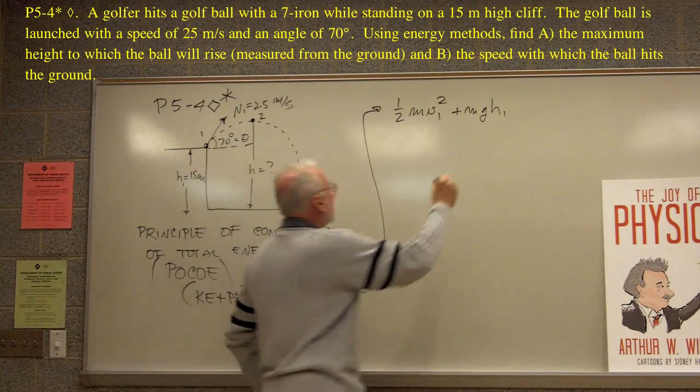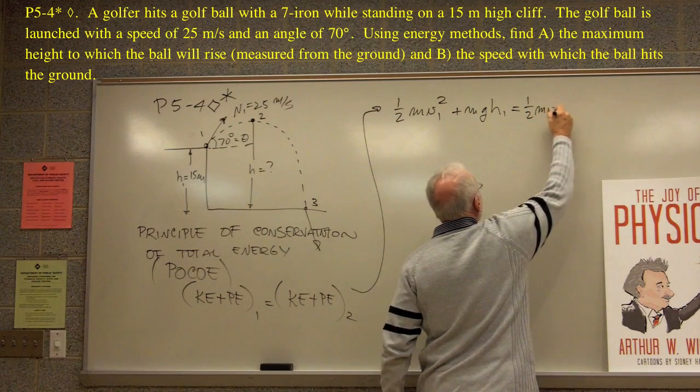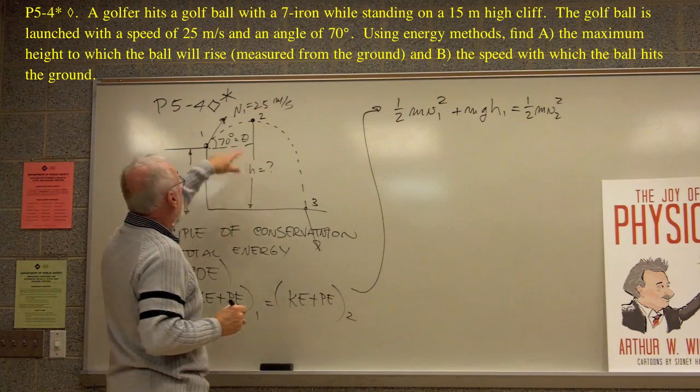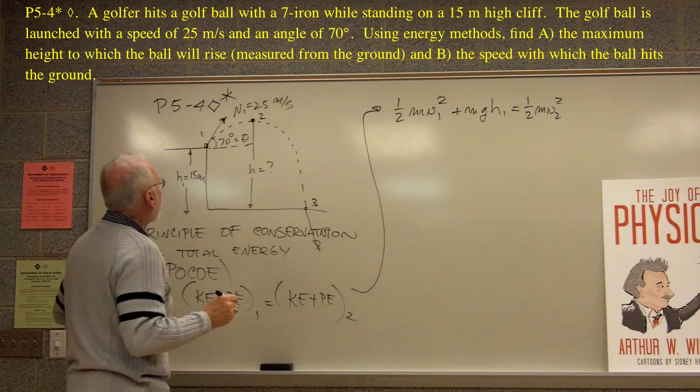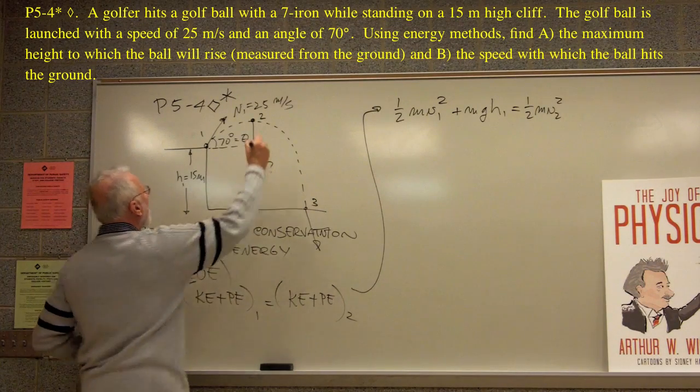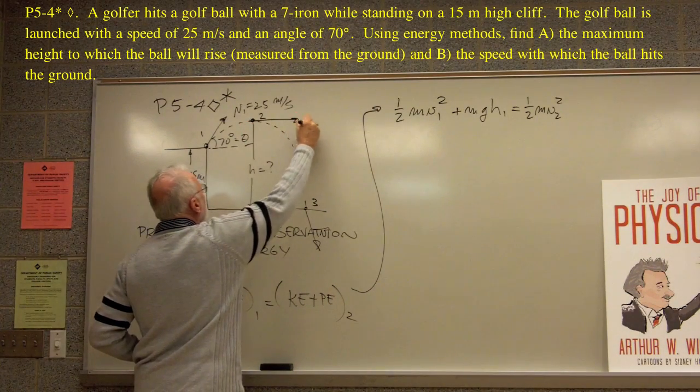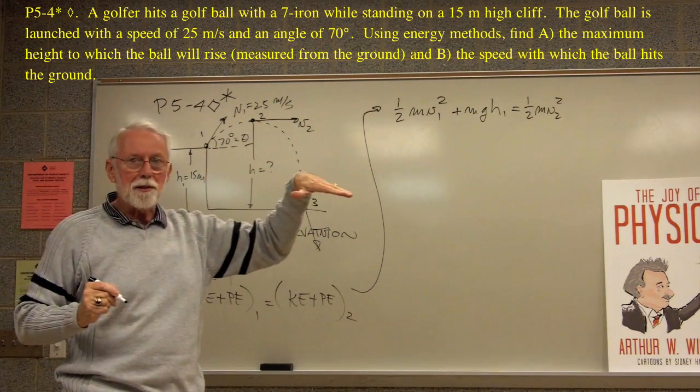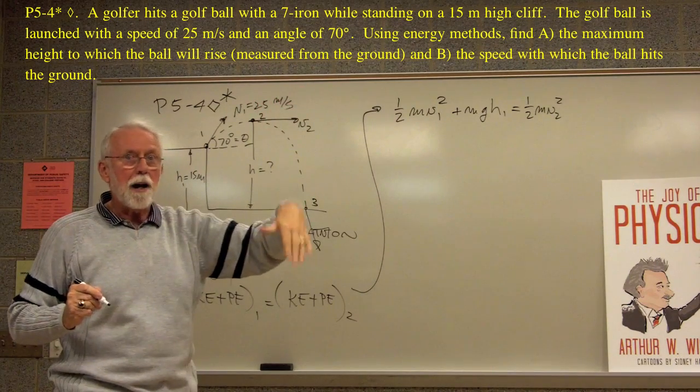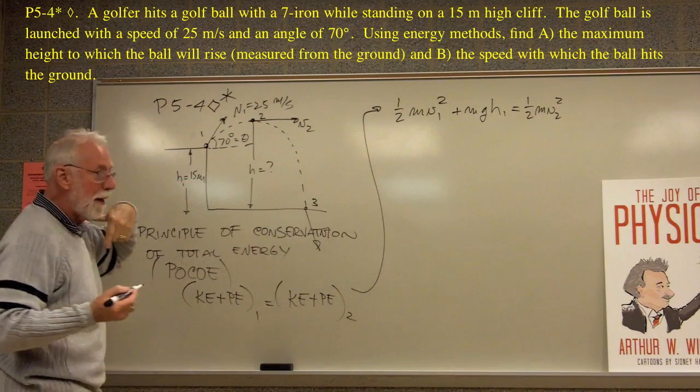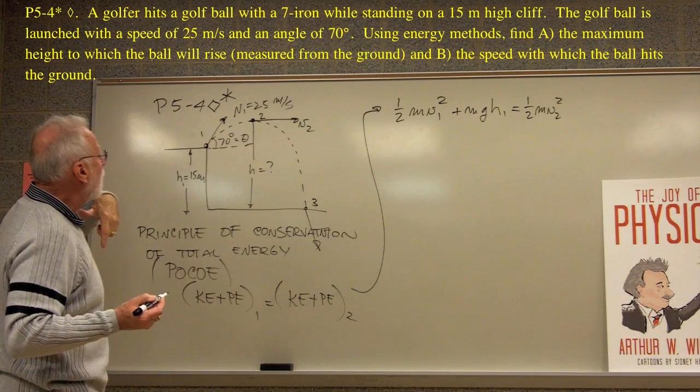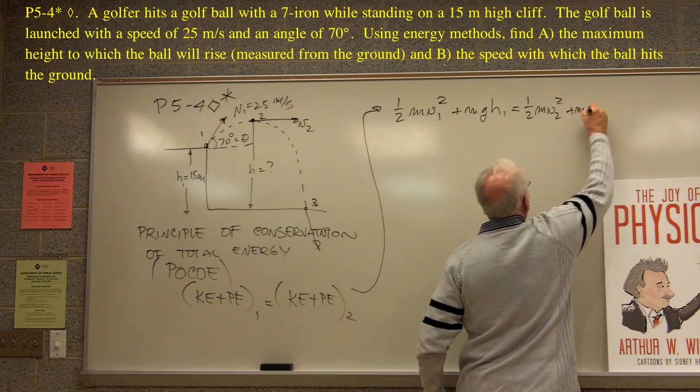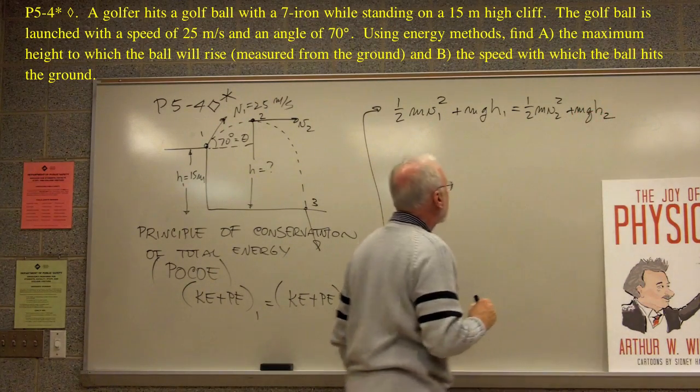That must equal one-half mv2 squared. And what's v2? v2 is the velocity this has right at the very top. We didn't really draw that. What does v2 look like? Well, v2 actually is like this. I've drawn it horizontally. Does that make sense to be horizontal? Well, it isn't going up anymore and it hasn't started to go down. So all that's left is horizontal. So it's horizontal velocity. That's v2. One-half mv2 squared plus mgh2. So those two things are equal to each other.